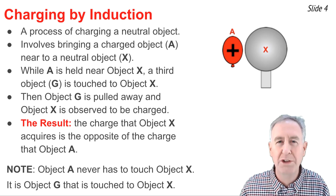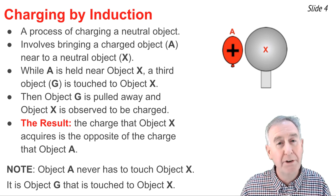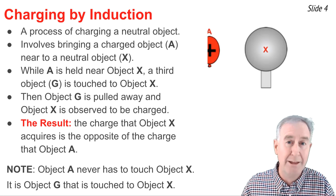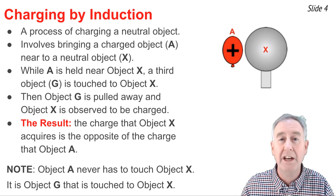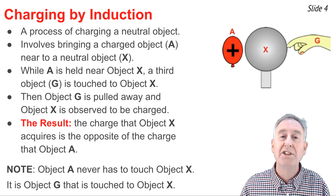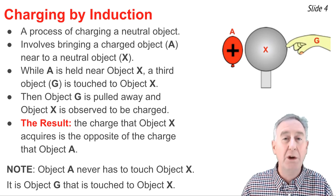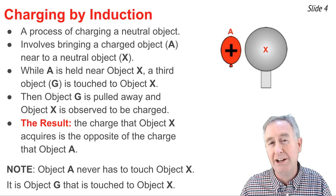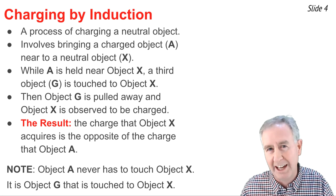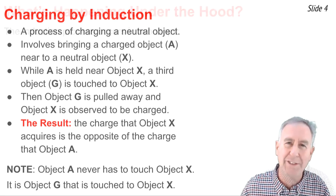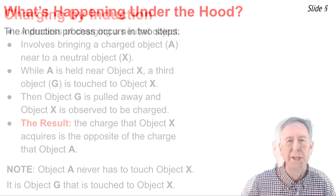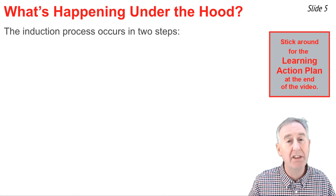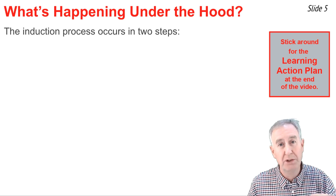Two important things to note: first, there is never any contact made between object A, the balloon, and object X, the sphere. Second, the only contact that ever is made is between object G, the hand, and object X, the sphere. To understand the charging by induction process, you have to think in terms of two steps.